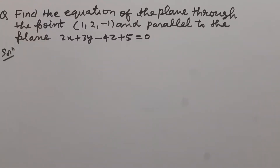In this question, we have to find the equation of the plane through the point (1, 2, -1) and parallel to the plane 2x + 3y - 4z + 5 = 0.